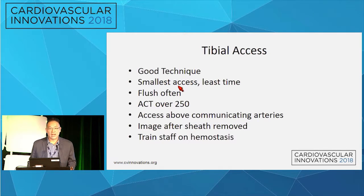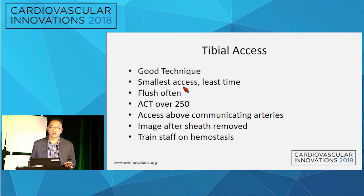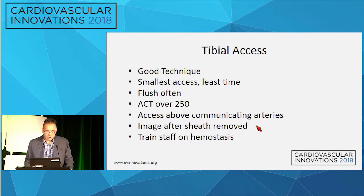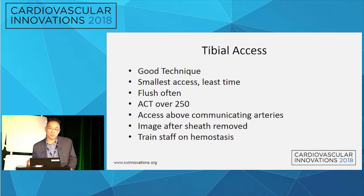Typically I use the smallest access and keep it in for the least amount of time. The least amount of time doesn't mean get it out as soon as possible - I make sure I cross the lesion, deliver therapy, and balloon before removing the sheath. Flush often, and I typically run my ACT over 250. If you have access from both directions, I like to image it after the sheath is removed to make sure there's no hematoma or pseudoaneurysm, and train your staff on hemostasis.